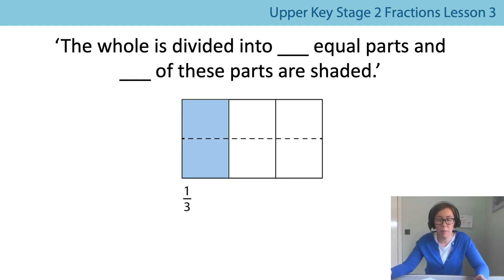What about if we have it divided again into more parts? So how many have we got this time? The whole is divided into six equal parts. And of those six parts, how many are shaded? Two of these parts are shaded. So that means one third and two sixths are equivalent.